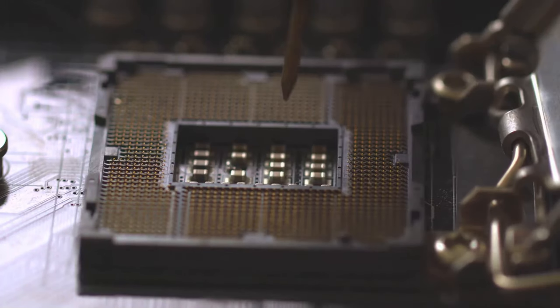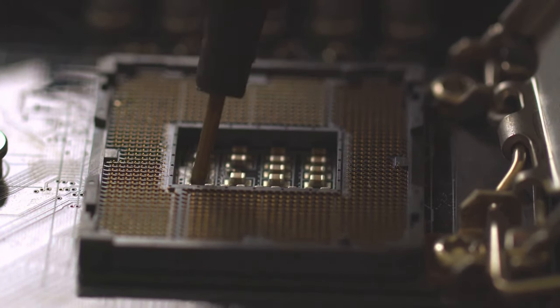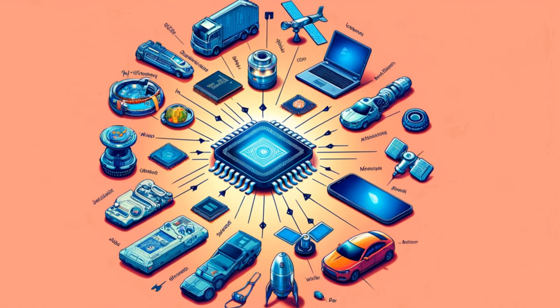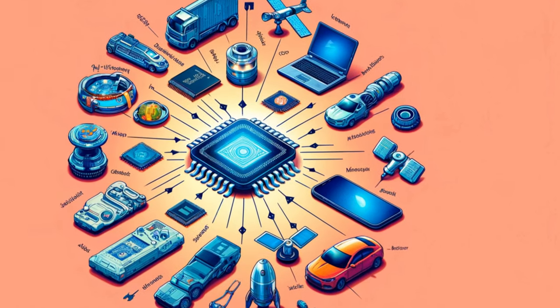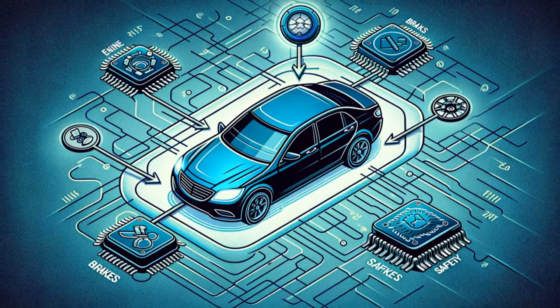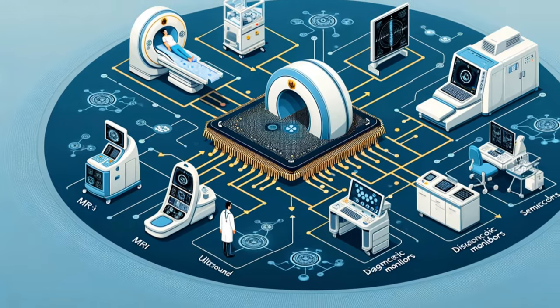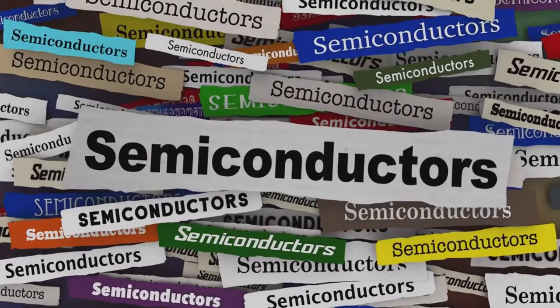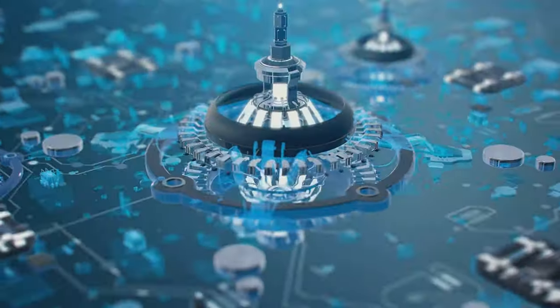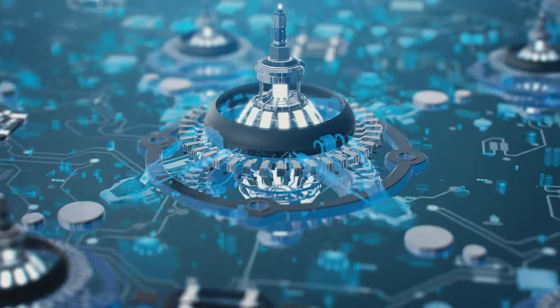From smartphones to satellites, semiconductors are the heart of countless electronic devices that we rely on every day. From smartphones and laptops to cars and airplanes, semiconductors play a crucial role in modern technology. In smartphones, semiconductors power the display, processor, memory and communication systems. In cars, they control the engine, brakes and safety features. In medical devices, they enable advanced imaging and diagnostics. The ubiquitous presence of semiconductors in our lives is a testament to their versatility and importance. They have revolutionized the way we live, work and interact with the world around us.